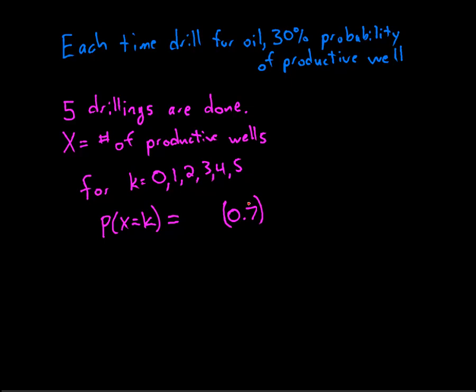Now how many drillings do I need to not be productive? Well there's five drillings total. I'm looking for the probability that k of them are productive so that means five minus k of them are not productive. And then the probability that a particular drilling is productive is 0.3. And I'll need k of those.